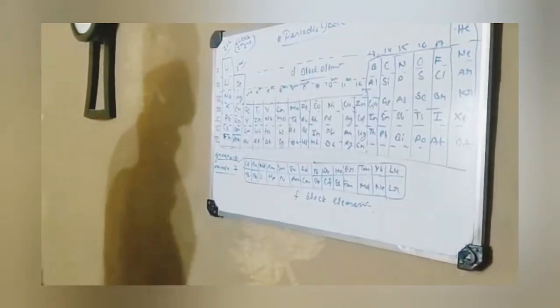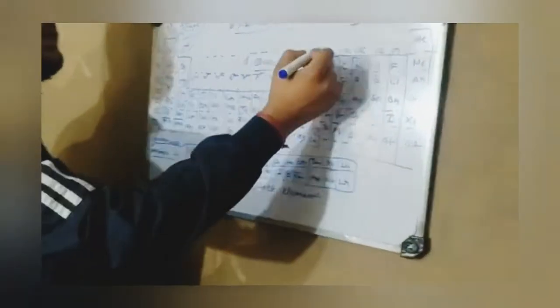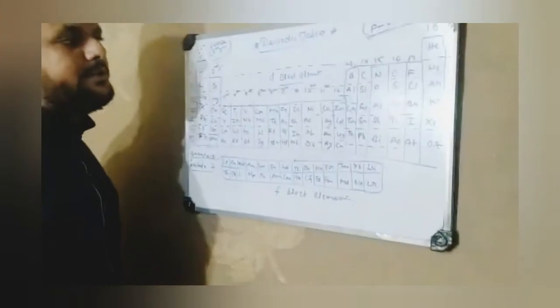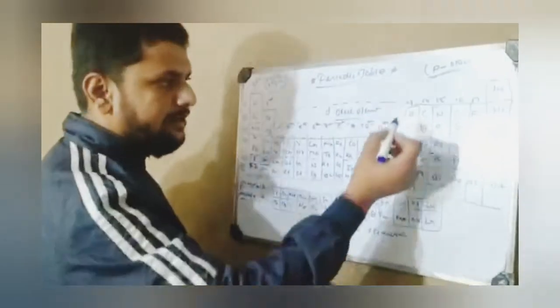We will talk about S-block. After S-block is P-block. P-block is made by groups 13 to 18 elements. Group 13 elements to group 18 elements are known as P-block elements.